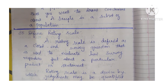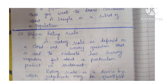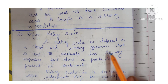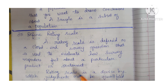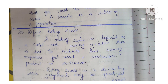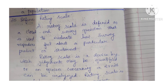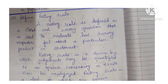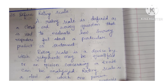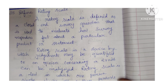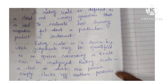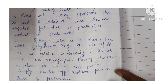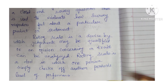Question 35: Define rating scale. A rating scale is defined as a closed-ended survey question used to evaluate how survey respondents feel about a particular product or statement. It is a device by which judgment may be quantified or an opinion concerning a trait can be analyzed. Rating scale is a tool in which one person checks off another person's level of performance.